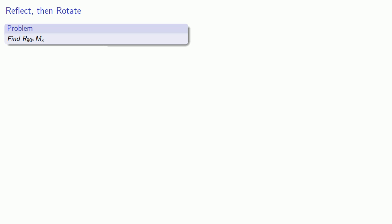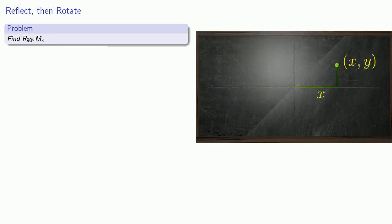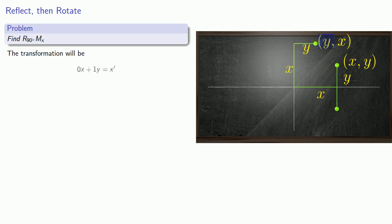Let's take a look at R90∘Mx — that's a reflection across the x-axis first, followed by a 90 degree counter-clockwise rotation. We'll have our point (x, y) with horizontal and vertical distances. After reflecting across the x-axis and then rotating 90 degrees counter-clockwise, all actual lengths remain unchanged, but we now go a vertical distance of x and a horizontal distance of y. So our coordinates are (y, x): the new x-coordinate is y, written as 0x plus 1y, and the new y-coordinate is x, written as 1x plus 0y. We use these coefficients to get our transformation matrix.